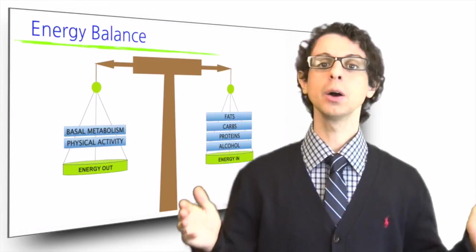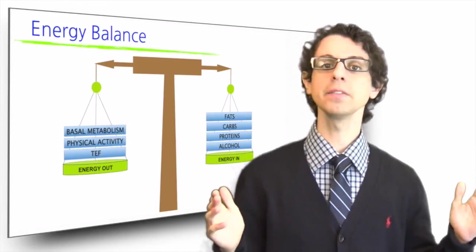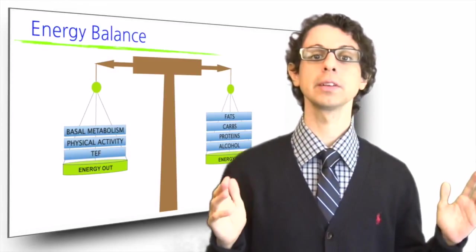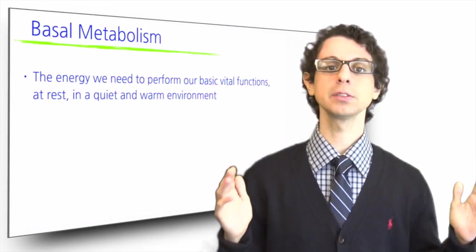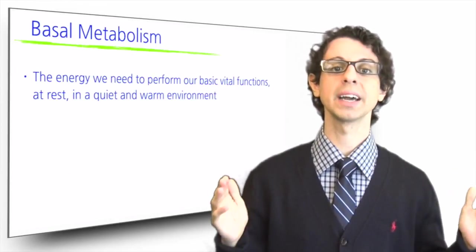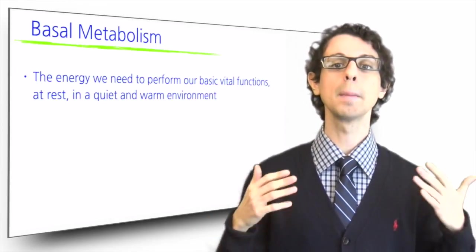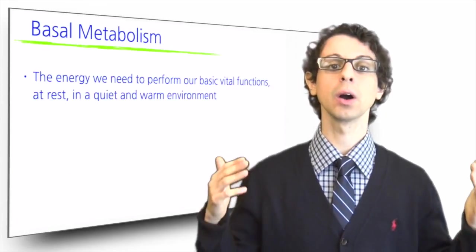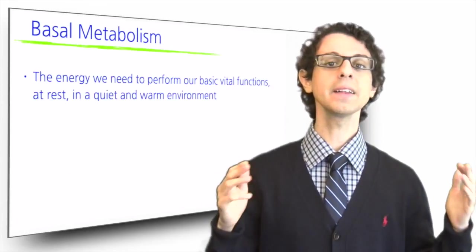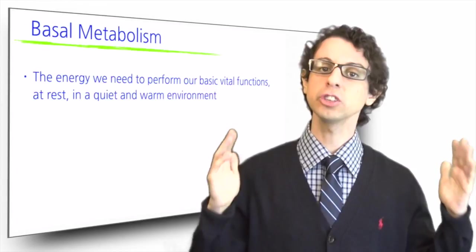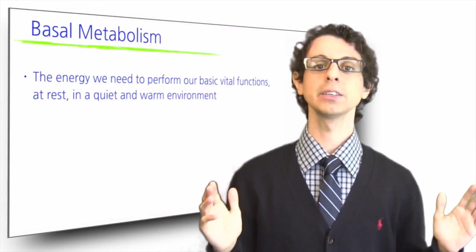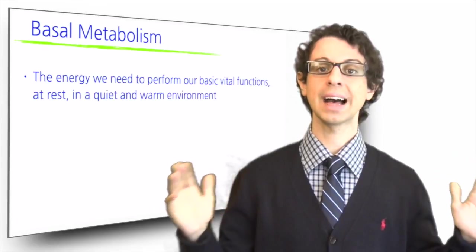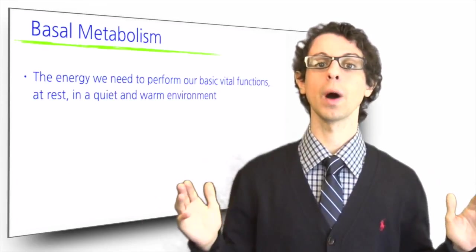On top of that, we also need to spend a small amount of energy to digest and utilize the food we eat. Our basal metabolism, or basal metabolic rate, is the energy we need to perform our basic vital functions such as breathing, pumping our heart, and allowing all of our organs to function. In other words, this is the energy we need to just survive without doing anything. Ideally, this would be calculated for a resting body in a fasting state in a warm and quiet environment.